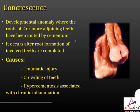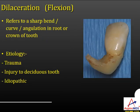Concrescence is where fusion between roots takes place after eruption. It is an anomaly where roots of two or more adjacent teeth are united by cementum, occurring after root formation is completed. Causes include traumatic injury, crowding, and hypercementosis associated with chronic inflammation. Dilaceration refers to a sharp bend, curve, or angulation in the root or crown of a tooth. Etiology is trauma, injury to a deciduous tooth, or it can be idiopathic.